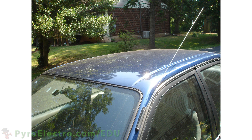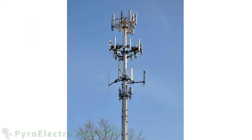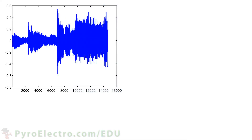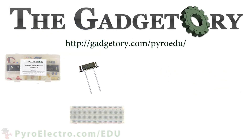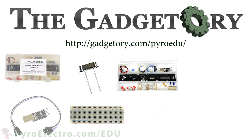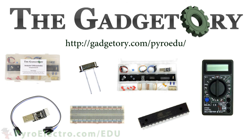In the real world, you don't have to look very far to see something that offers analog output. From cell phone antennas to clock radios, televisions, and radar, many things emit analog signals that digital devices like microcontrollers can't inherently understand. However, when we add an analog-to-digital converter to the mix, we can numerically quantify an analog signal as an integer and make use of the signal's voltage information to drive digital outputs. All parts in this online course were provided by the Gadgetory — visit them at gadgetory.com/pyroedu.